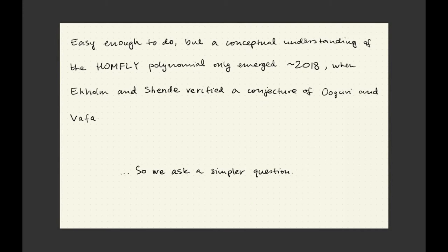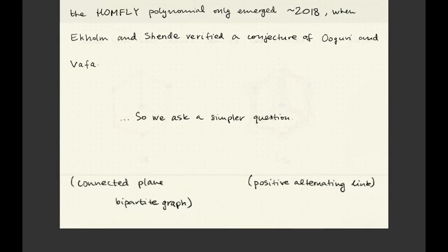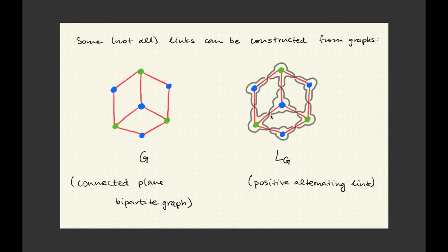However, a conceptual understanding of what is going on in this computation has not emerged until about two years ago. By now, there has been a conjecture coming from theoretical physics that has been rigorously verified by two of my colleagues, Tobias Eckholm and Vivek Schende. So now we have a little bit of an understanding of what this really is, but it's actually really complicated. So let me talk about something less ambitious — not a full understanding of the HOMFLY polynomial, only a part of it, and only in special situations.